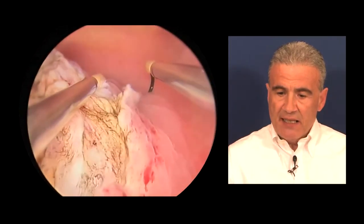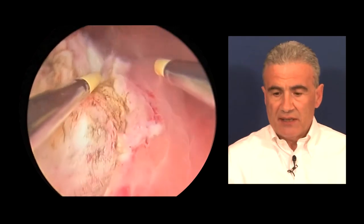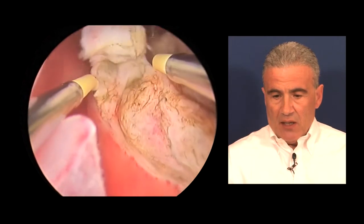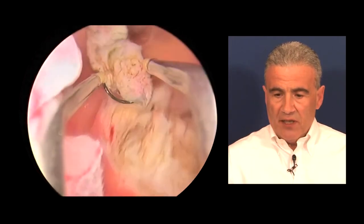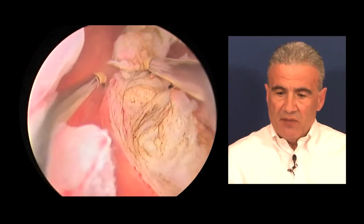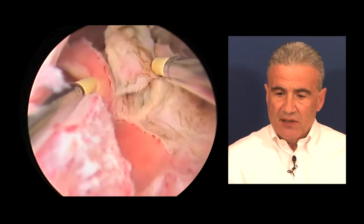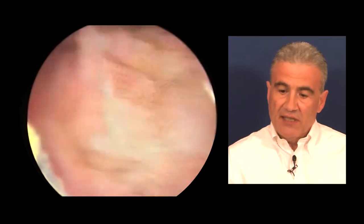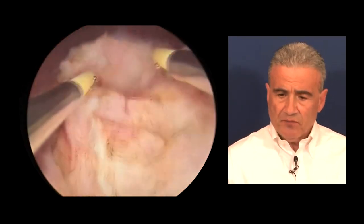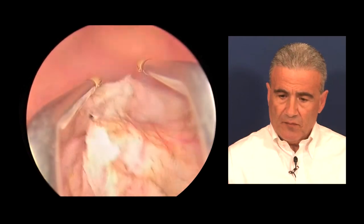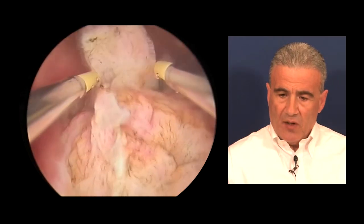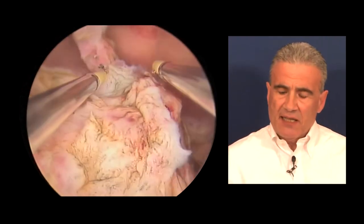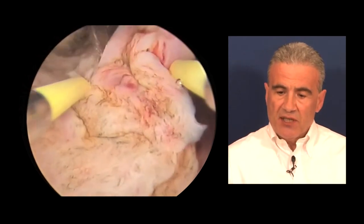We see that the intramural cleavage plane of the myoma is beginning to take shape. Here we see another completion of the extraction of the neoformation fragments at intracavitary level. Here is an additional identification of the cleavage plane. At this point, the surface of the myoma must be levelled with the surface of the uterine wall.